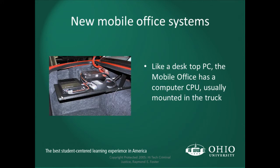Like a desktop PC, the mobile office has a computer CPU usually mounted in the trunk. Most new police interceptors have full trunk trays and full cabinets. We purchase police vehicles off state term pricing at roughly $25,000 a vehicle, and we will put $25,000 or more back into the car in terms of radio system, mobile computers, license plate readers, video systems, and light controls. When it's all said and done, the total will be about $55,000 to $60,000. There's a lot more cost to a police car than just the cost of the car.